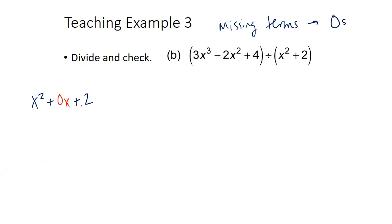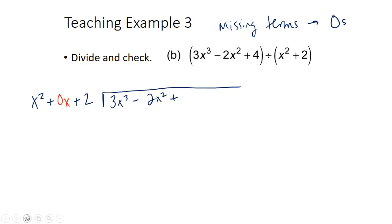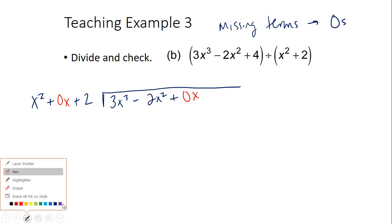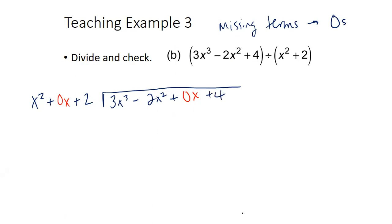Divided by — so now looking here, it's 3X cubed minus 2X squared plus four. What is this missing? It's missing an X term also. So when I write it, it's going to be 3X cubed minus 2X squared plus 0X plus four. Once you have filled in all the missing terms, you're going to just follow the same process: divide, multiply, subtract, bring down.